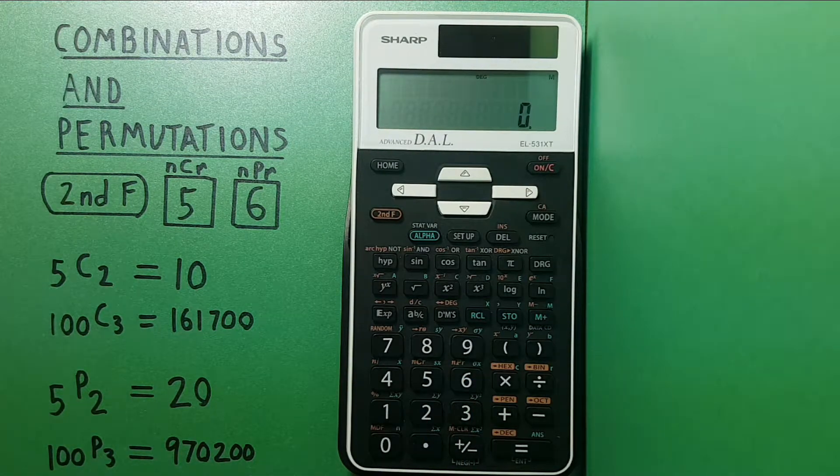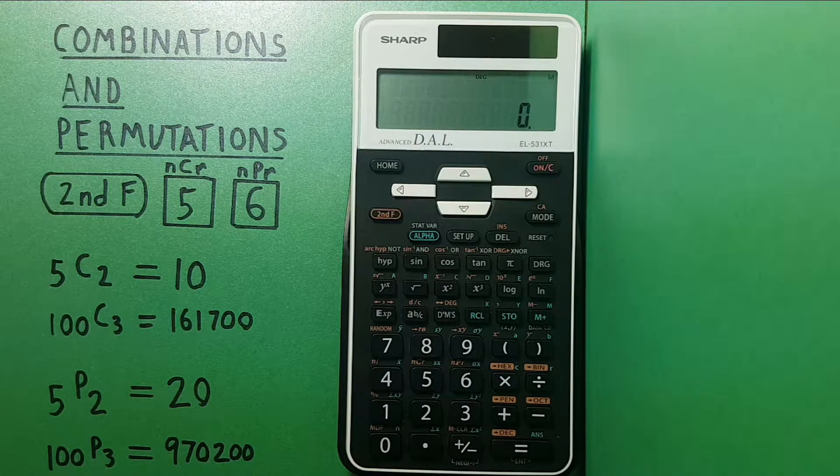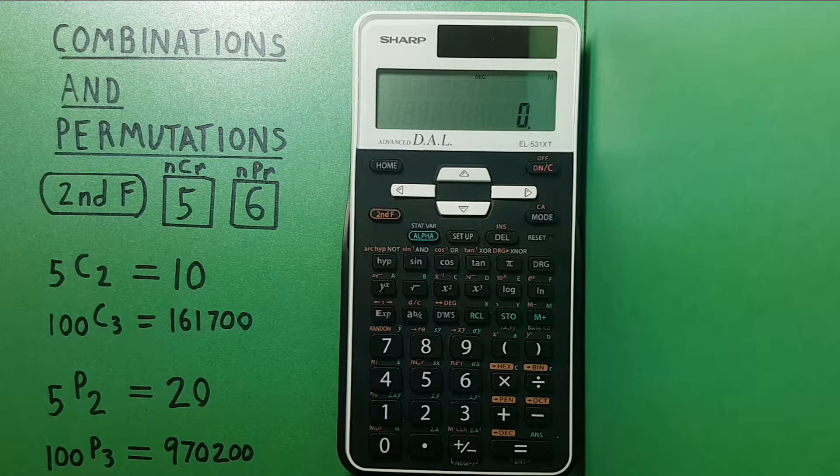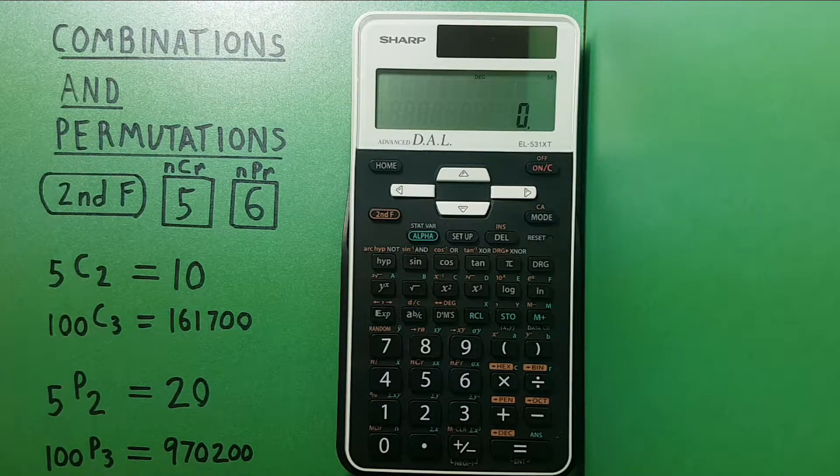All right, to start let's look at combinations. Combination is when you choose a certain number of objects from a set and the order does not matter.